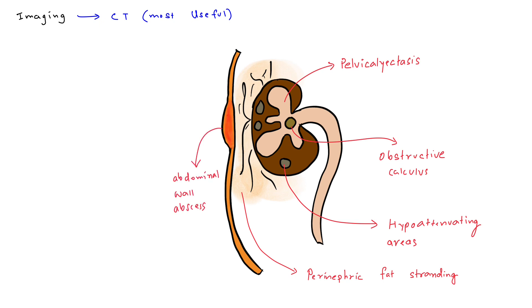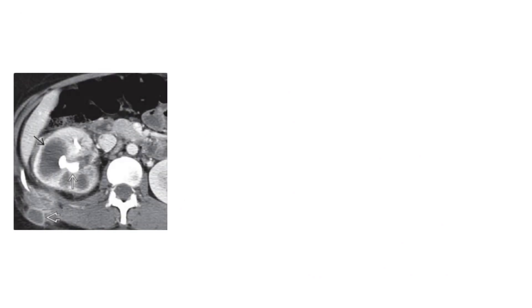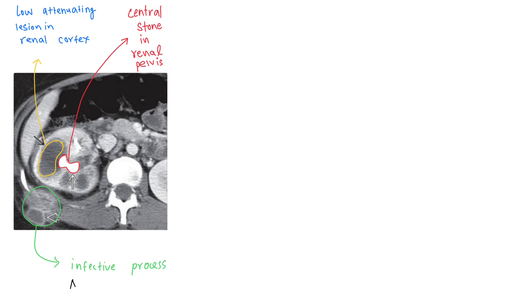With these points in mind, we can go ahead and look at a few CT plates suggestive of XGP. The first plate is the axial cut of CECT abdomen and pelvis of a 65-year-old female who presented with pyuria, fever, and right flank pain. In the first plate we can see a central stone in the renal pelvis, surrounded by a low-attenuating lesion found in the cortex. We can also see the infective process has spread from the perirenal space into the surrounding abdominal wall.